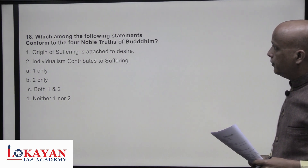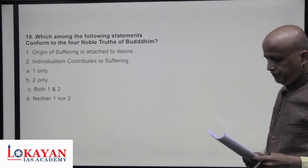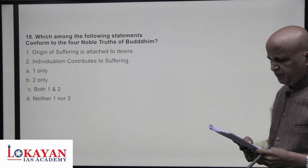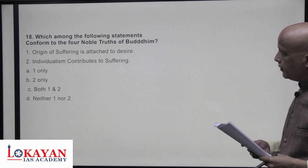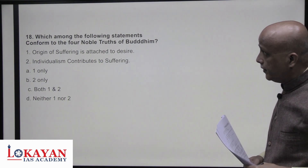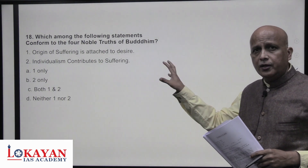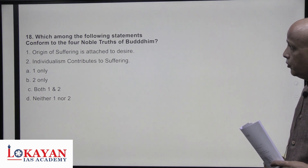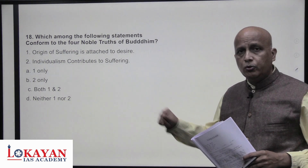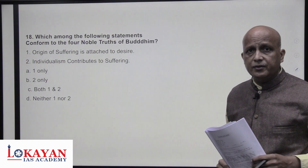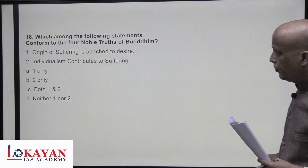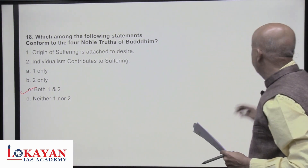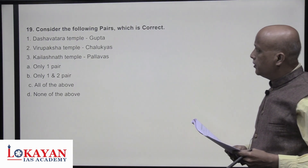Which of the following statements confirm the Four Noble Truths of Buddha? The origin of suffering is attached to desire — correct; trishna (desire) is the main reason for suffering. Individual ego, possessiveness, and the desire for glory also contribute to suffering. Both statements one and two are correct — answer is C.